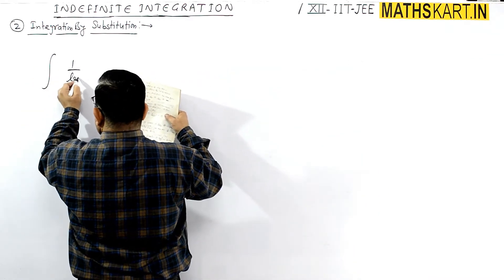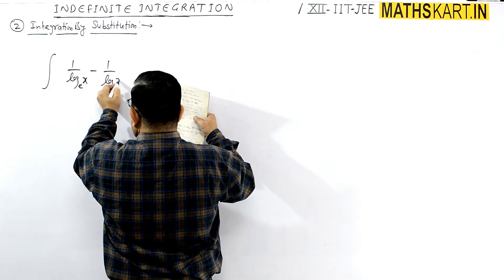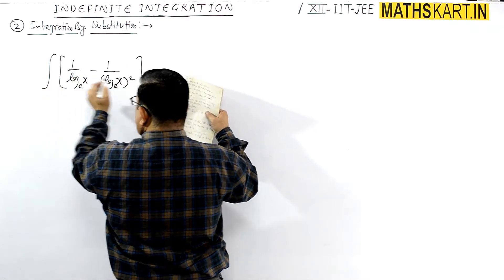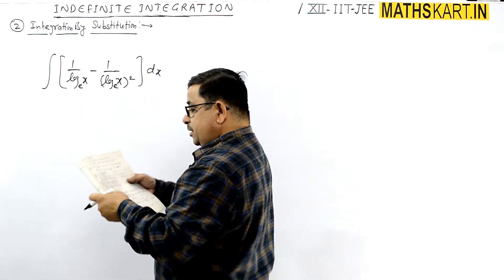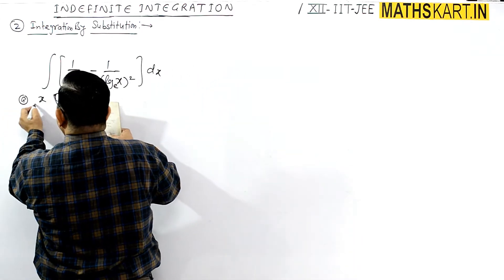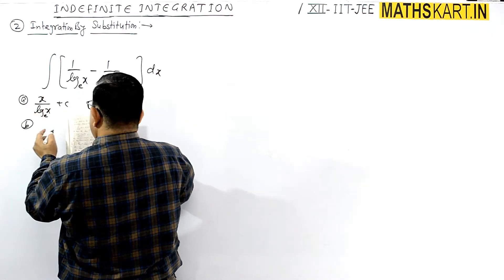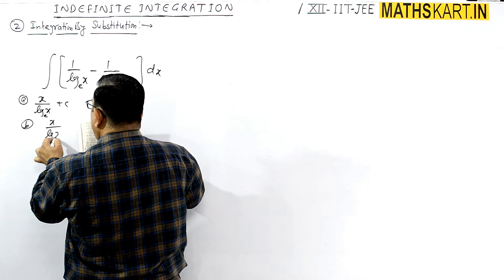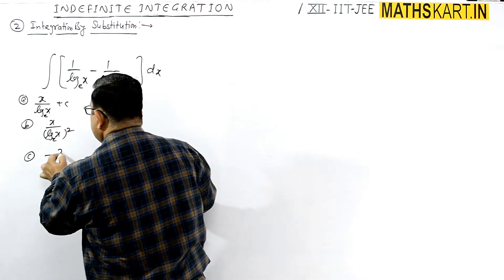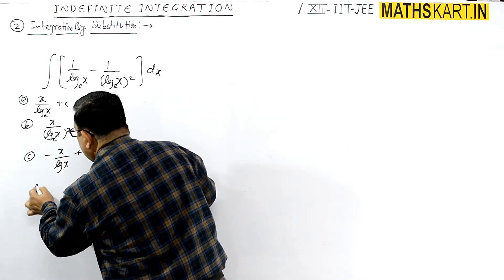Next question: integrate (1 upon log x minus 1 upon log²x) dx. Options: A is x upon log x + C, B is x upon (log x)² + C, C is minus x upon log x + C.